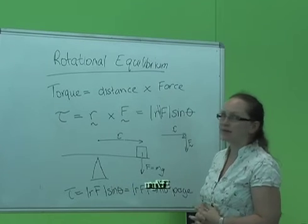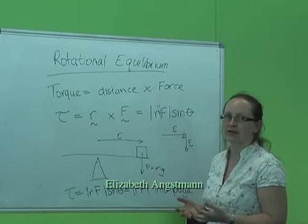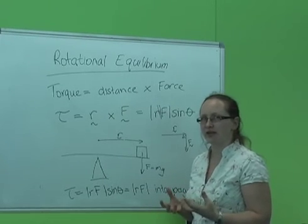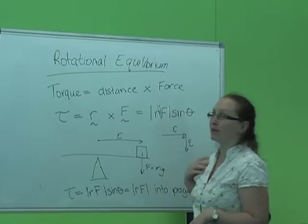In the second part of this experiment, you're going to be looking at bodies which are in rotational equilibrium. Two bodies are in rotational equilibrium if the torques acting on them are equal but opposite.